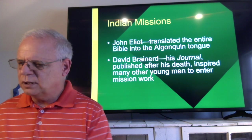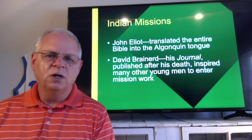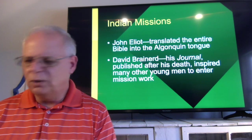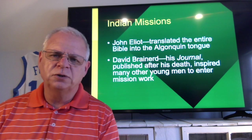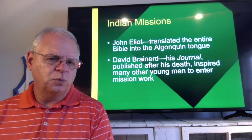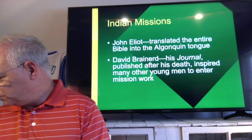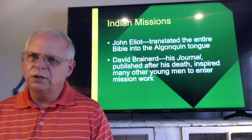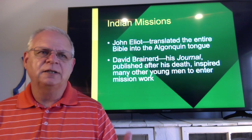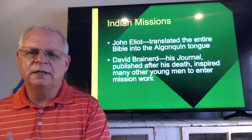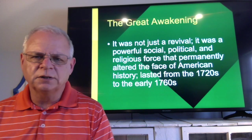When it came to reaching the Native Americans, John Eliot did something significant: he translated the entire Bible into the Algonquin tongue, which meant he had to create a written form of their language in order to teach them to read it and have the Bible for themselves. David Brainerd was a young missionary who went to the Native Americans; his journal was published after his death — he died around age 29 — but it inspired many other young men to enter the mission field. One ongoing problem was thinking you had to first convert Native Americans to European ways of living before seeing them come to Christ, which created conflicts.